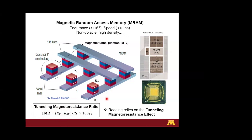To maximize the TMR ratio we need to understand where it comes from — what material properties affect the size of this TMR ratio. This talk is about where the TMR ratio comes from and which material properties we should seek in trying to optimize this figure of merit.